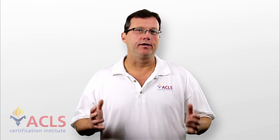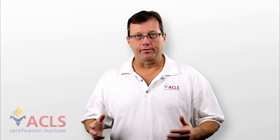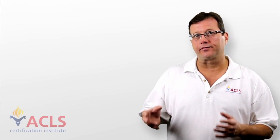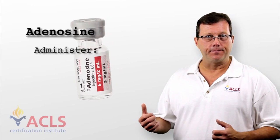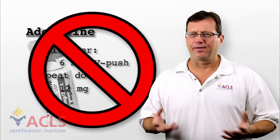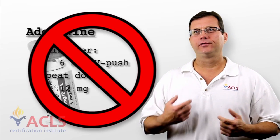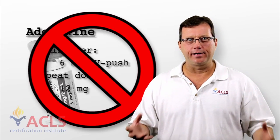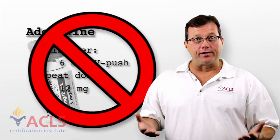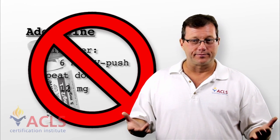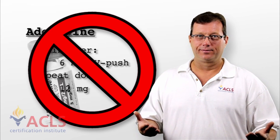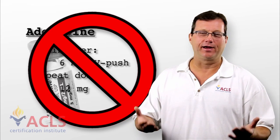One of the big differences between narrow-complex regular and narrow-complex irregular tachycardias is the drug of choice. For a narrow-complex SVT, our drug of choice is adenosine. You really don't want to use adenosine in irregular-complex arrhythmias. Has it been used before? Absolutely. Did the patient die? No. Is adenosine indicated for AFib with RVR? No — but does it happen? Absolutely. Did the patient die? Of course not. However, it's not indicated and generally shouldn't be used in irregular rhythms.